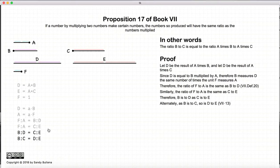Alternatively, using Proposition 13 of this book, the ratio of B to C is equal to the ratio of D to E.